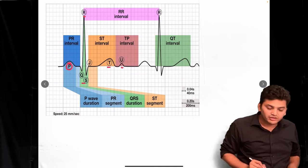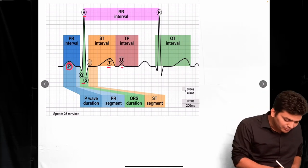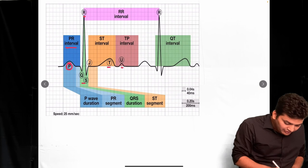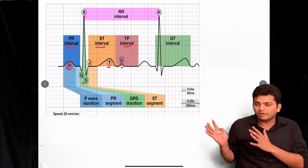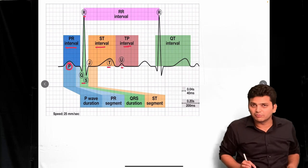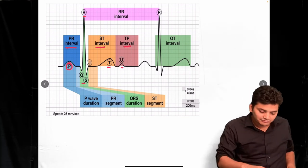When it comes to intervals, there are three: the PR interval, the ST interval, and the TP interval. You can easily identify each interval and figure out the boundaries from the waveform. Thank you.